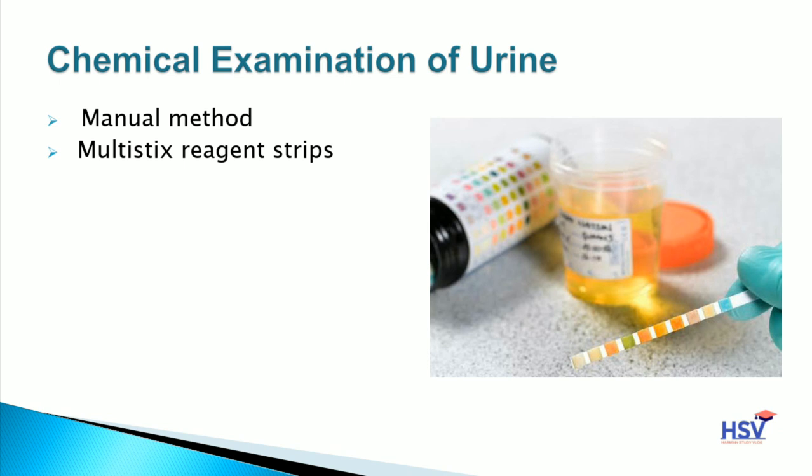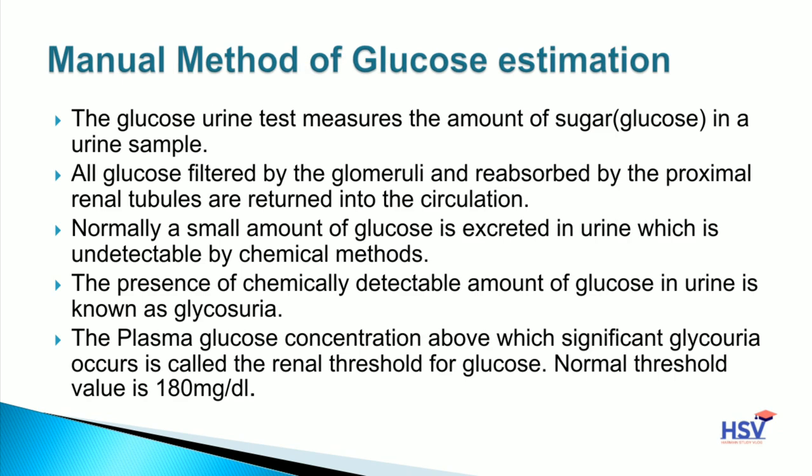The chemical examination of urine can be done by two methods: the first is the manual method, and the second is multi-strix reagent strips. Urine की chemical examination हम manual method से भी कर सकते हैं और multi-strix reagent strips use करके भी कर सकते हैं। Next is the manual method of glucose estimation.